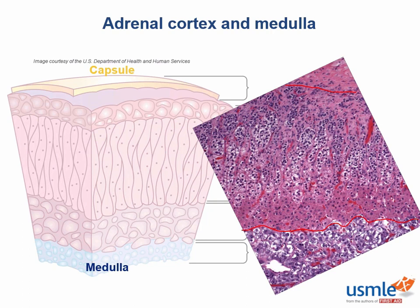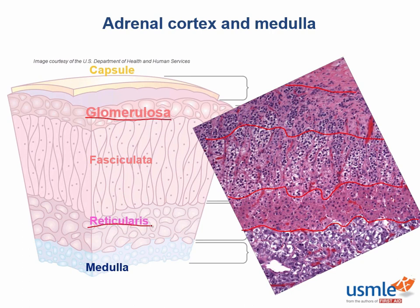Take a moment to demarcate the three cortical layers on your own. If the order is G, F, R, then the fasciculata is the middle layer — highlighted here. It's recognizable by its porous appearance, but unlike the medulla, it's porous because of lipid droplets (not preserved on the slide) that appear like multiple little pores. The zona fasciculata produces cortisol and therefore hoards the most cholesterol. The glomerulosa is closer to the capsule, and the reticularis is closer to the medulla. The reticularis contrasts nicely with the medulla: it's very eosinophilic (red-looking), while the medulla is very basophilic (blue-looking).